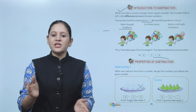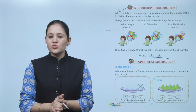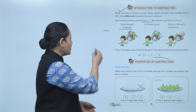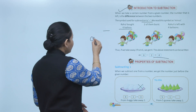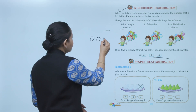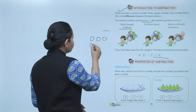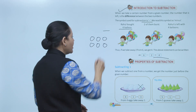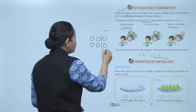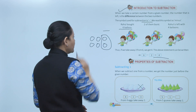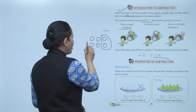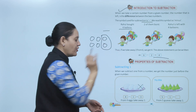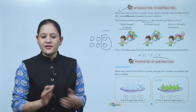So total 6 balloons, out of that 2 are burst. How many are left? 1, 2, 3, 4. Clear.